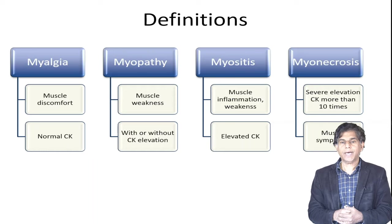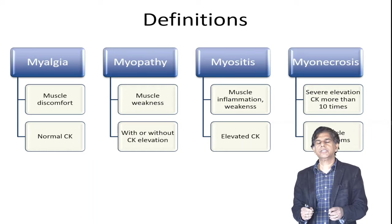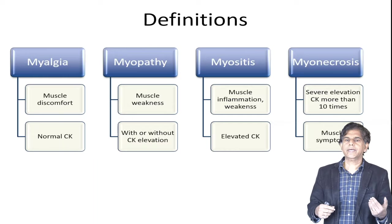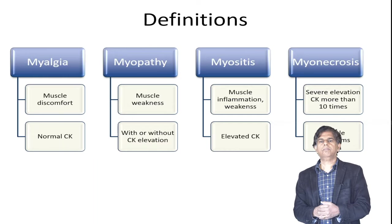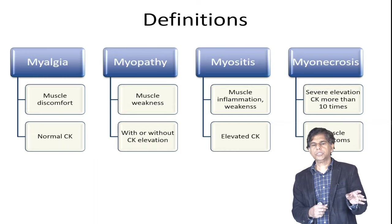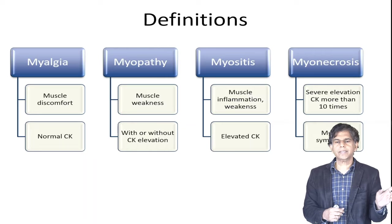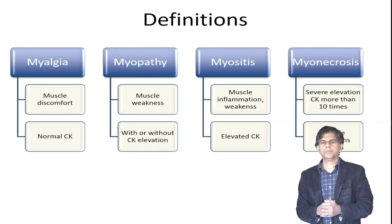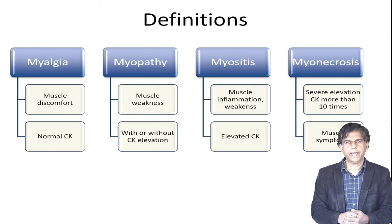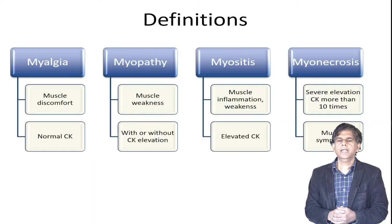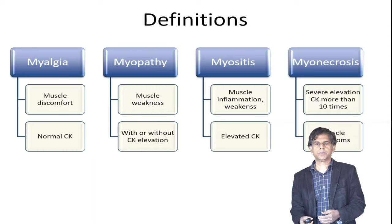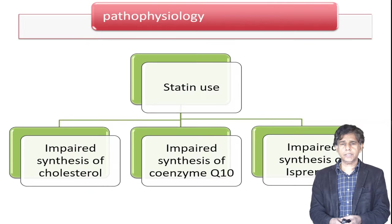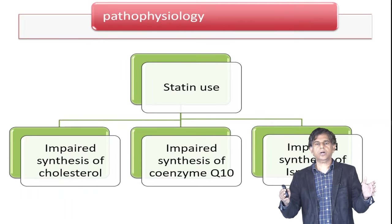Myositis involves muscle inflammation and weakness along with elevated creatine kinase. Myonecrosis is the more serious condition — it features severe elevation of creatine kinase and significant muscle symptoms. Now let's discuss pathophysiology — how do statins cause this much damage?